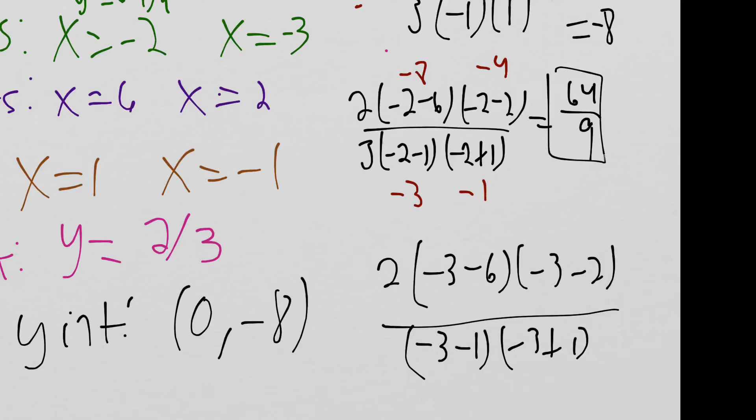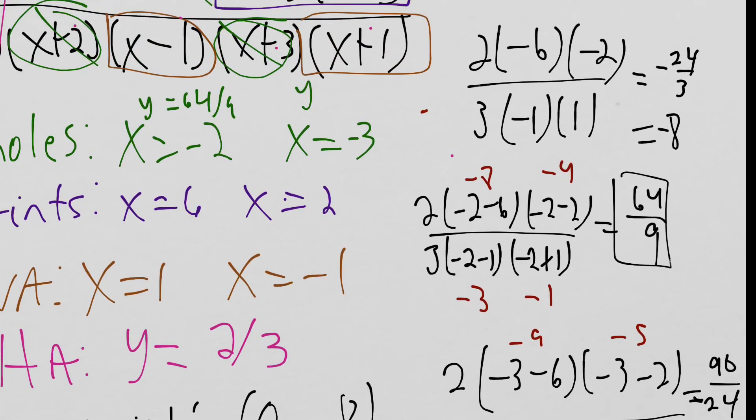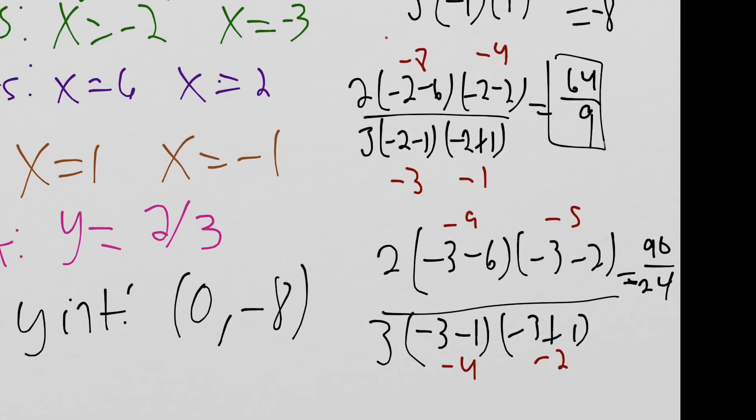So what does that give us? This is negative 9, this is negative 5, this is negative 4, this is negative 2. So we get negative 9 times negative 5 times 2 is going to be 90. And then on bottom, we have to multiply by 3 as well. So we get 24. Negative 4 times negative 2 times 3 is 24. So our y value for this one is 90 over 24.